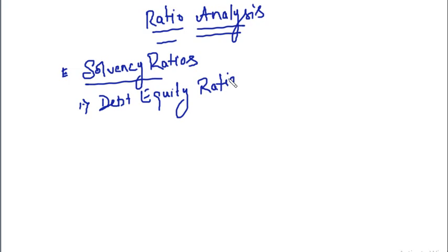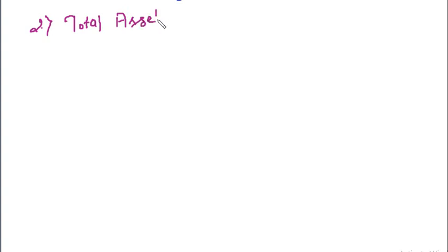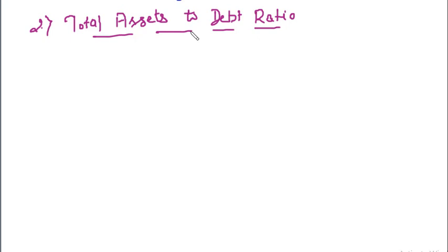In this lecture we are going to start with the second ratio under solvency ratios. The second ratio is total assets to debt ratio. A ratio is a relationship, so what we are going to study here is a relationship between financial factors.